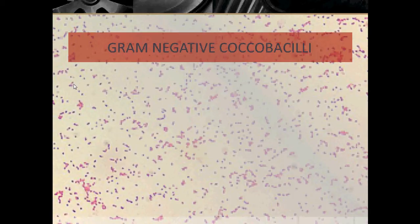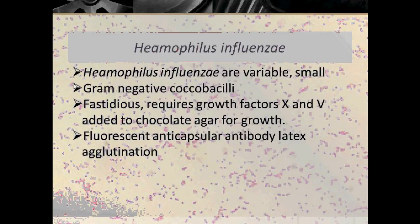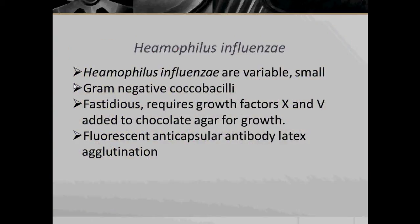Hello everybody. Today we are going to look at Gram-negative Coccobacilli. These bacteria are termed Coccobacilli because their shape is somewhere in between Coccus and Bacillus. They are Gram-negative because they take up the counterstain Safranin instead of retaining Crystal Violet, hence they appear pink under the microscope right after Gram stain. The first bacteria we are going to look at is Haemophilus influenzae.